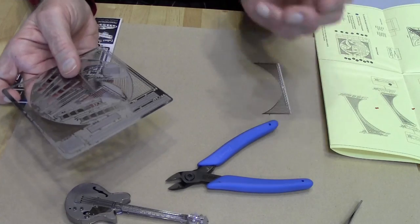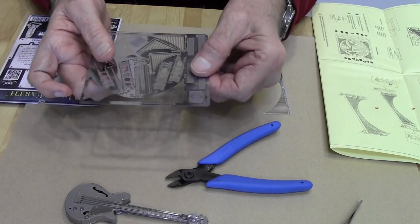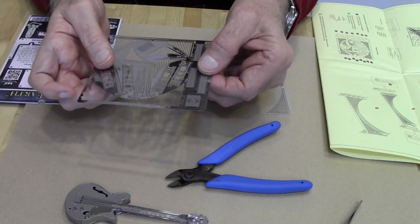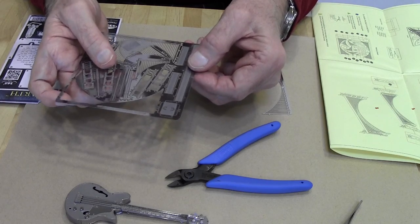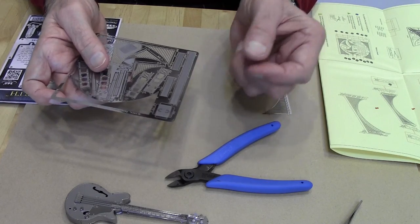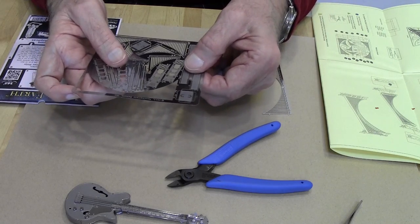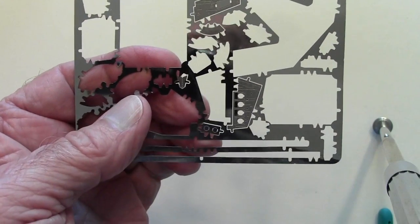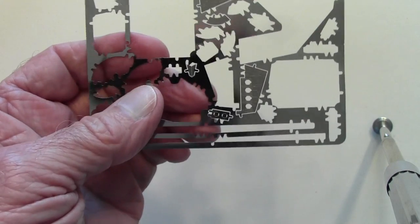Some have tried exacto knives. This is not photo etched, this is laser cut, so it's thicker than photo etched material that modelers are used to using. You can cut out photo etched pieces with an exacto knife, but I highly suggest that if you try that with these, you're going to have some deformities or bending. You need to go to the flush cutters.